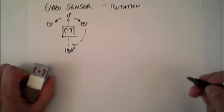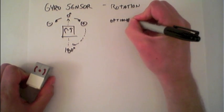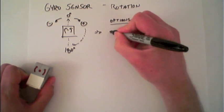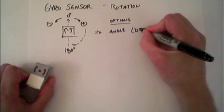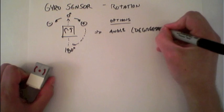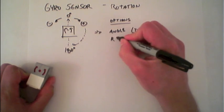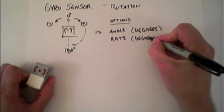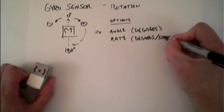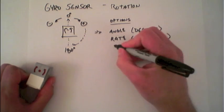There's three options when using this. The first is to measure angle, as we saw right here, and that's measured in degrees. The second one is to measure rate, which is measuring degrees per second. And the third is to reset.